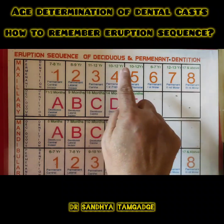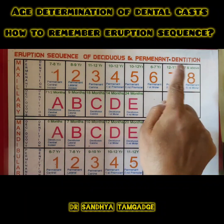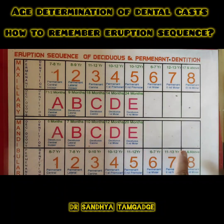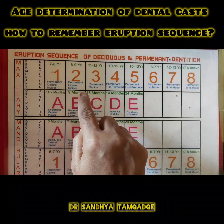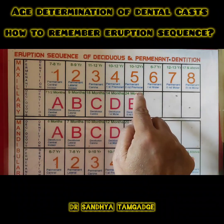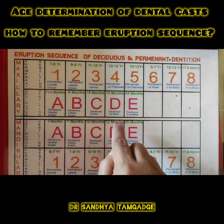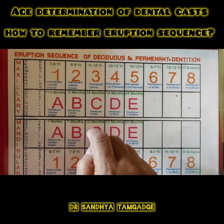Some numbers are written indicating eruption times. You can see the green color represents eruption time for lower permanent teeth, and similarly the chart also shows eruption times for the upper and lower deciduous quadrants.